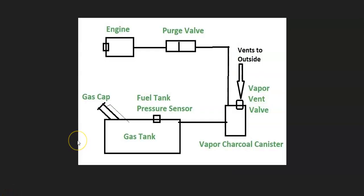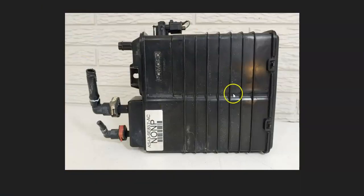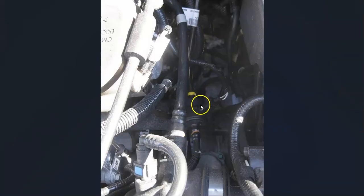Some other possible causes, although less common: there could be something wrong with the wiring, or there's a fuel tank pressure sensor that reports to the onboard computer. If the fuel tank pressure sensor goes bad, it could report bad data, making the computer think there's a problem when there isn't. The charcoal canister itself could also be leaking or damaged and may need to be replaced.